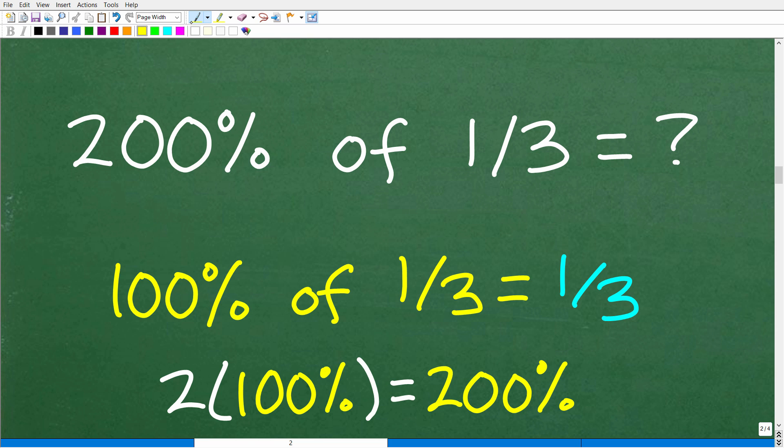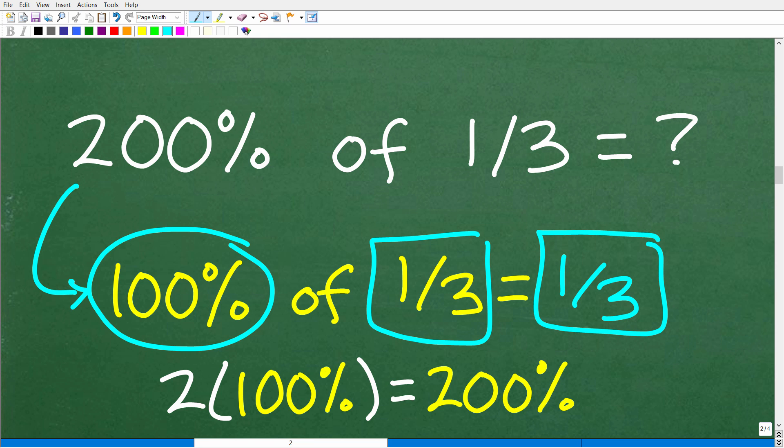Well, we may have said in our brain, like, all right, 200%. First of all, let me just think about 100%. So, what's 100% of one-third? If 100% is all of one-third, so how much is all of one-third? Well, it's one-third, right? 100% of one-third is one-third, okay?